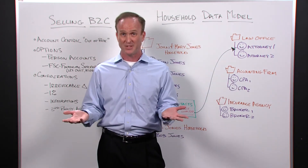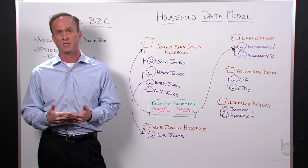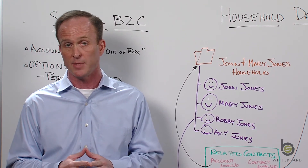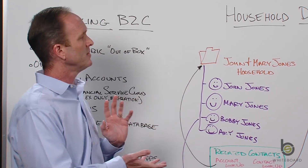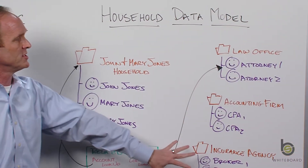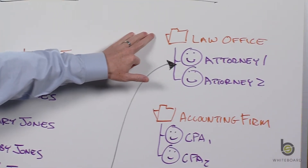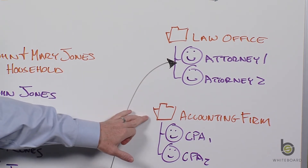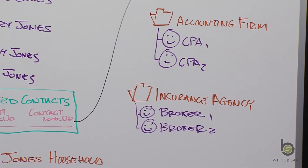There is another option that's not really documented by Salesforce but is very popular in the consulting industry — I'm calling it the household data model. It allows us to stay with traditional accounts and contacts. Looking at these illustrations, on the far right we have traditional accounts: a law firm with two attorney contacts, an accounting firm with two CPAs, and an insurance agency with two insurance broker contacts.